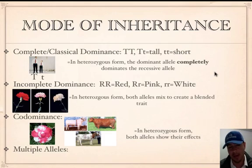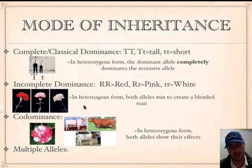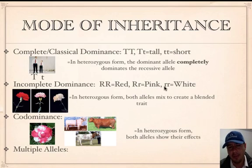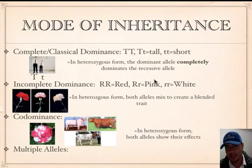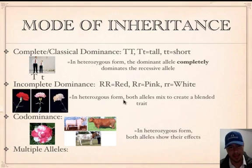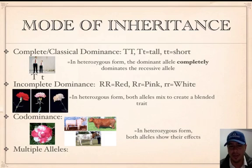Here's an example of snapdragon flowers showing incomplete dominance. Big R stands for red, little r means white. When you have big R big R, you get red; when you have little r little r, you get white. But when you have the heterozygous form big R little r, you get pink — red didn't completely win and white didn't completely win; they mixed to give an in-between blended trait. In incomplete dominance, in the heterozygous form, both alleles mix to create a blended trait.